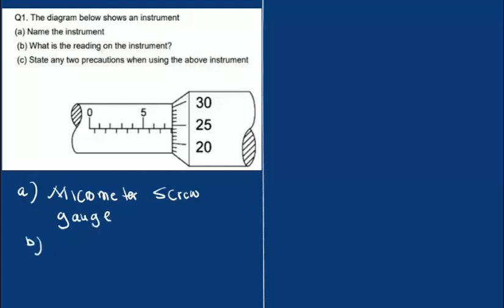What is the reading on the instrument? Now to know the reading on the instrument, we first have to know the reading on the main scale and the reading on the vernier scale.